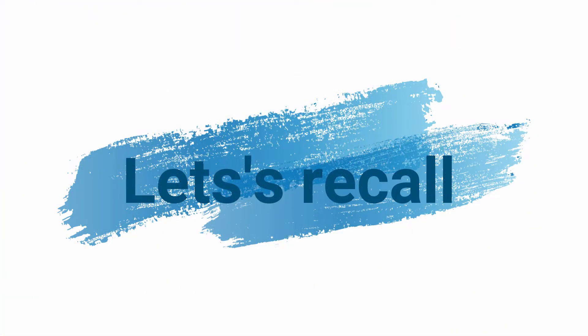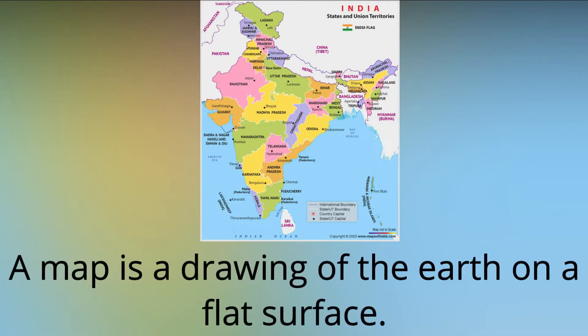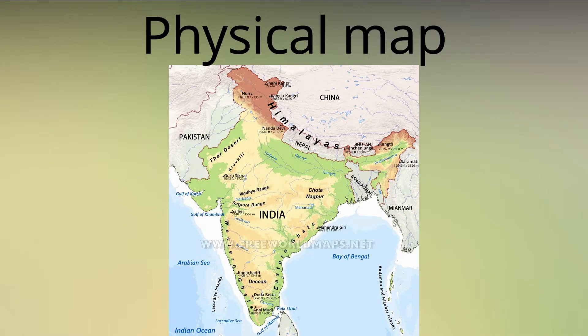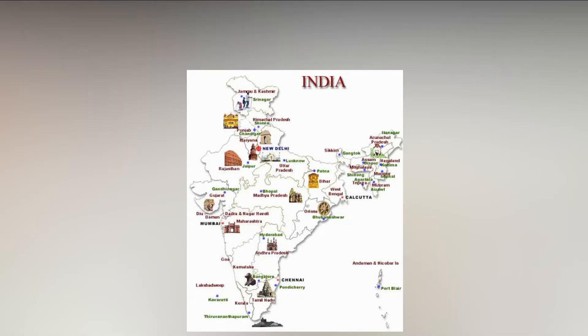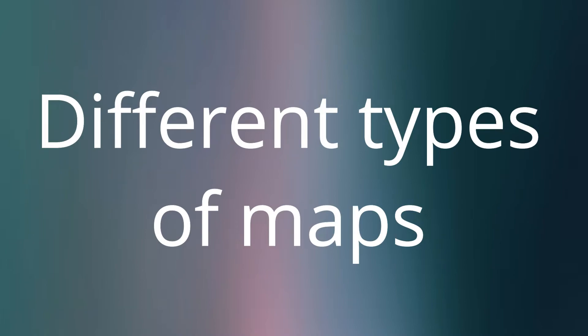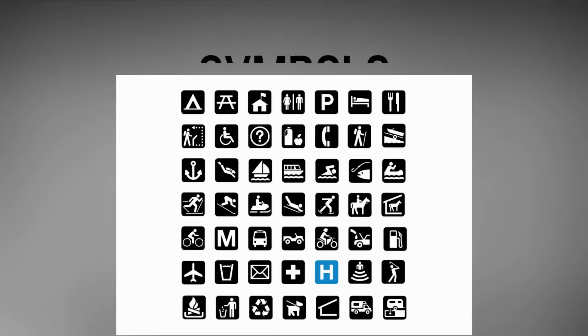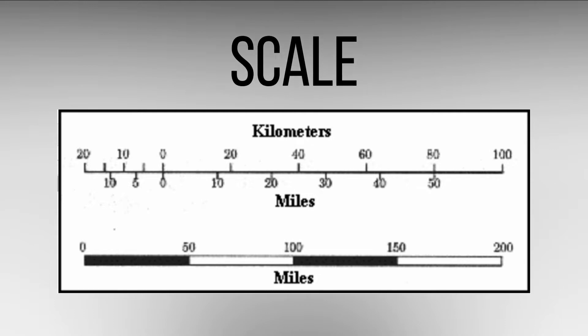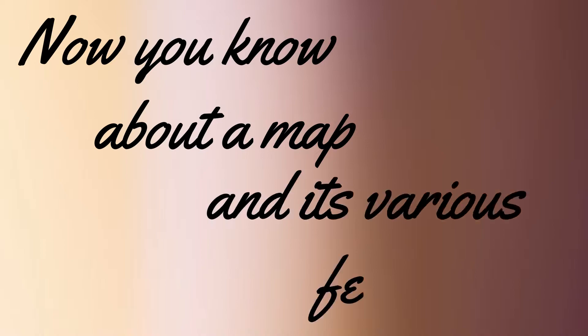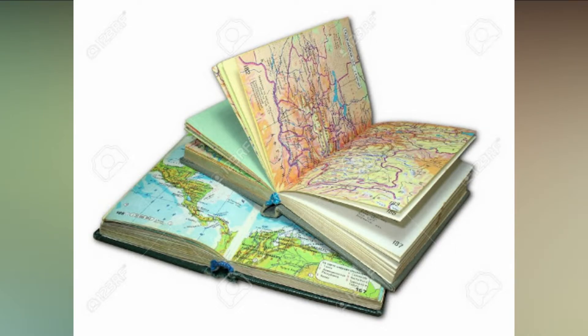Let's recall what we just learned about maps. A map is a drawing of the earth on a flat surface. Physical map, thematic map, tourist map, and political map are the different types of maps. We can read a map with the help of a key or legend, symbols, grid, and scale. Now you know about a map and its various features. Open your atlas and find out these features in it.